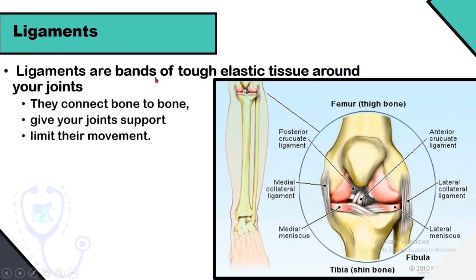A ligament is a band of tough, flexible fibrous connective tissue that connects two bones or cartilage and holds them together to form a joint. Ligaments also support the joint and limit its movement. In the stifle joint, examples include the anterior cruciate ligament, posterior cruciate ligament, medial collateral ligament, and lateral collateral ligament. In contrast to a ligament, a tendon is a flexible but inelastic cord of fibrous tissue that attaches muscle to bone — tendons will be studied in myology.